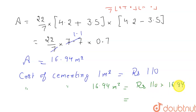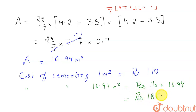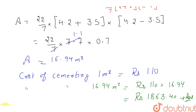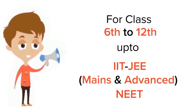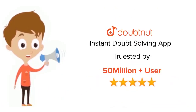Multiplying 110 by 16.94 gives us rupees 1863.40. So this is the amount we have to spend in cementing the whole path. For class 6–12, IIT JEE, and NEET level, trusted by more than 5 crore students — download DoubtNet today.